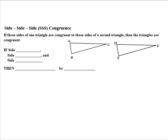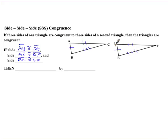Our first way of proving triangles congruent is called Side-Side-Side. Basically, if three sides of one triangle are congruent to three sides of a second triangle, then the triangles are congruent. So if side AB is congruent to side DE, side AC is congruent to side DF, and side BC is congruent to side EF — all three sides are congruent — then we can say triangle ABC is congruent to triangle DEF by the Side-Side-Side congruence theorem.